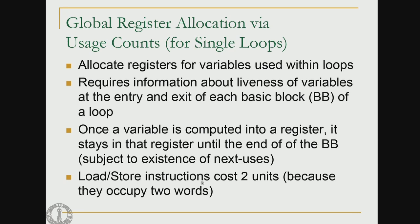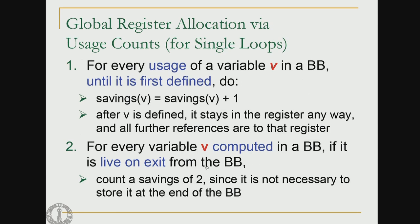Load and store instructions cost two units because they occupy two words — this is the assumption when computing what is known as the usage count. The usage count has two components. The first: for every usage of a variable v in a basic block until it is first defined, if it is assigned to a register we save one unit — savings(v) = savings(v) + 1. After v is defined, it stays in the register so nothing extra is saved.